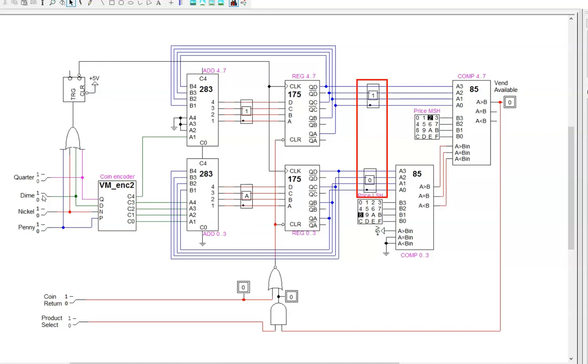Wait, where do we see the 16? The register is 8 bits, so we are reading it through two hex displays. Hex 1 0 equals decimal 16. Then, I'll add 1 quarter. The total should now be 41 cents, or hex 2 9. 41 cents is greater than the price of 40 cents.